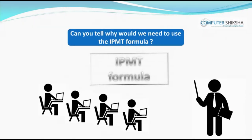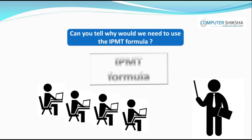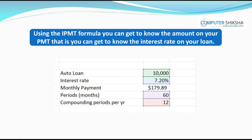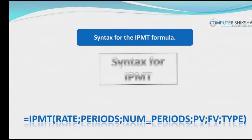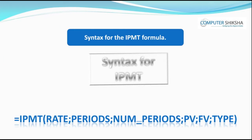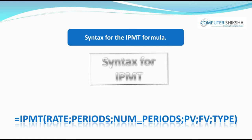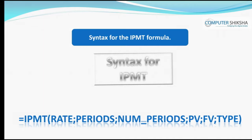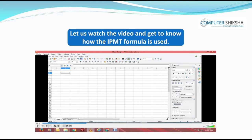Can you tell why we would need to use the IPMT formula? Using the IPMT formula, you can get to know the interest portion of your PMT — that is, the interest you will be paying on your loan. The syntax is: =IPMT(rate; per; nper; pv; fv; type). Let us watch this video and see how the IPMT formula is used.